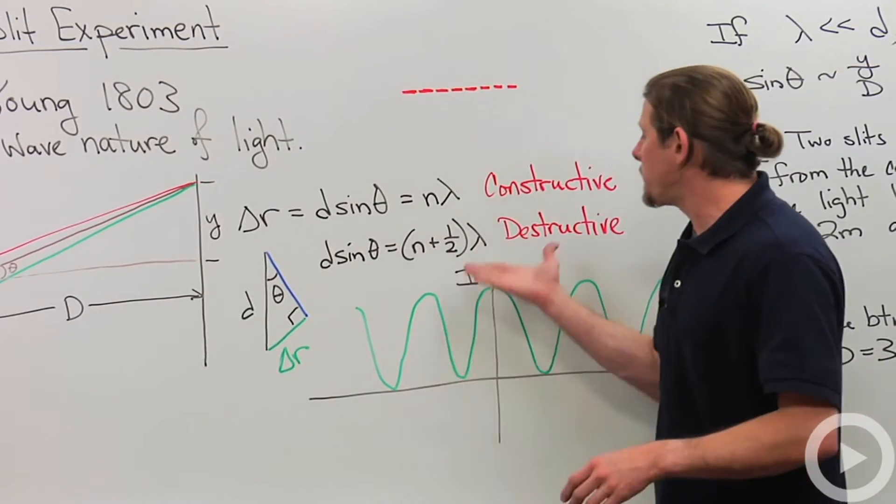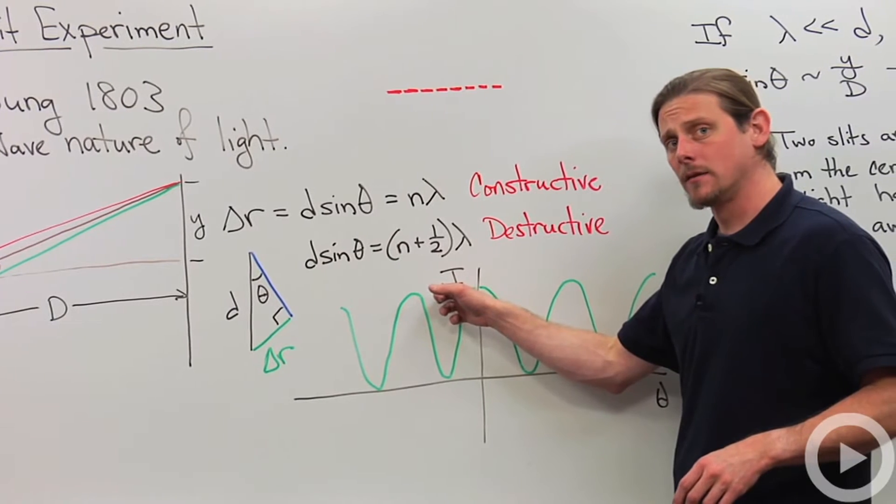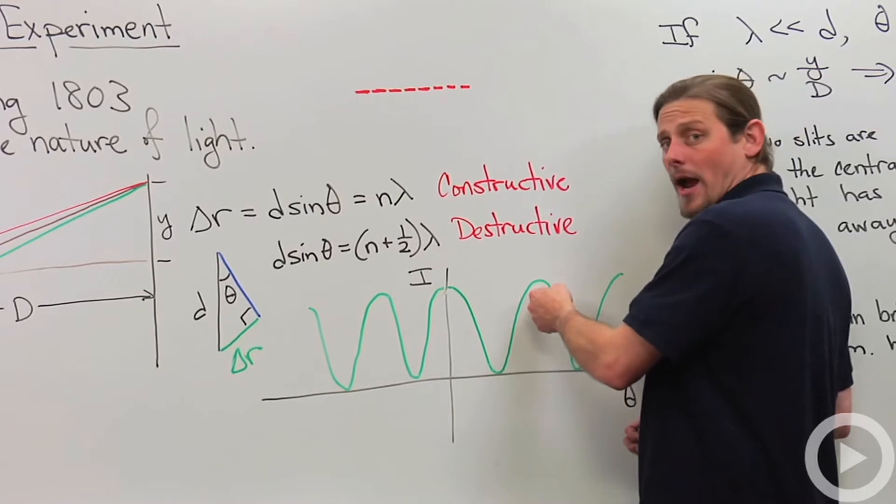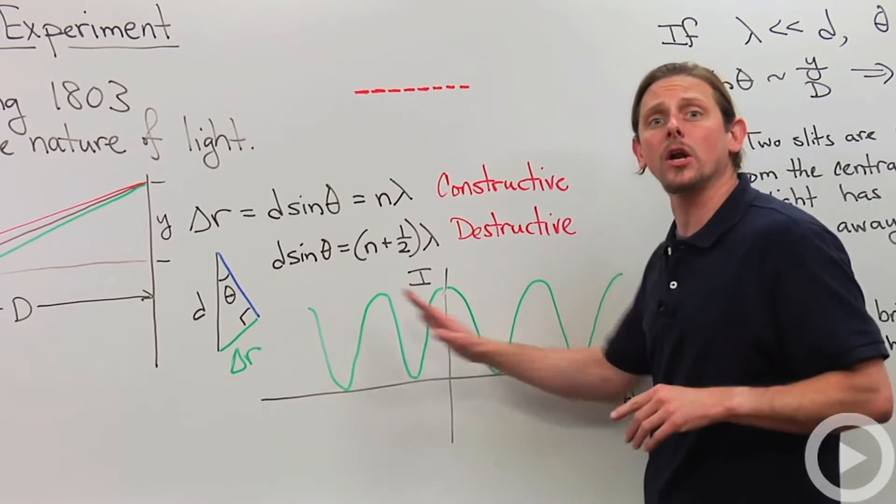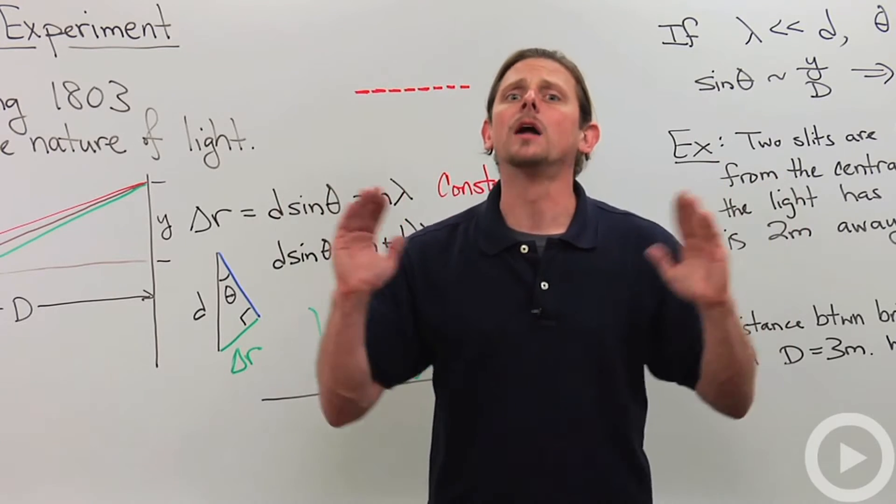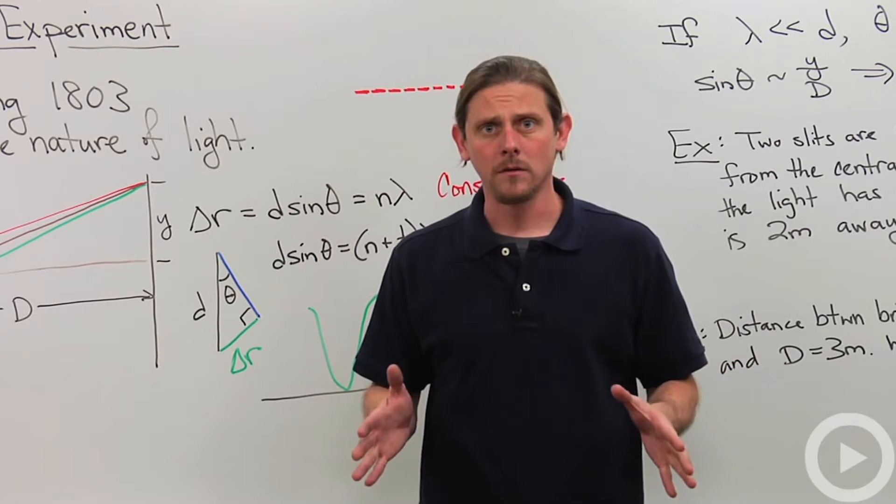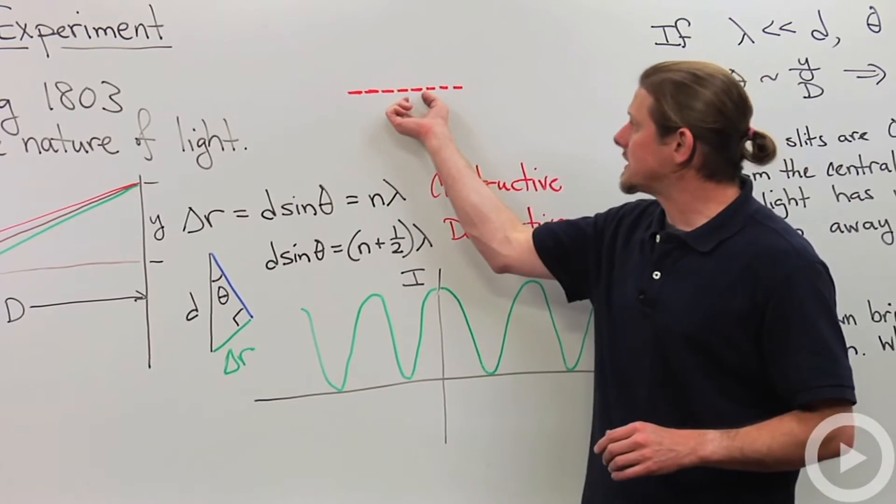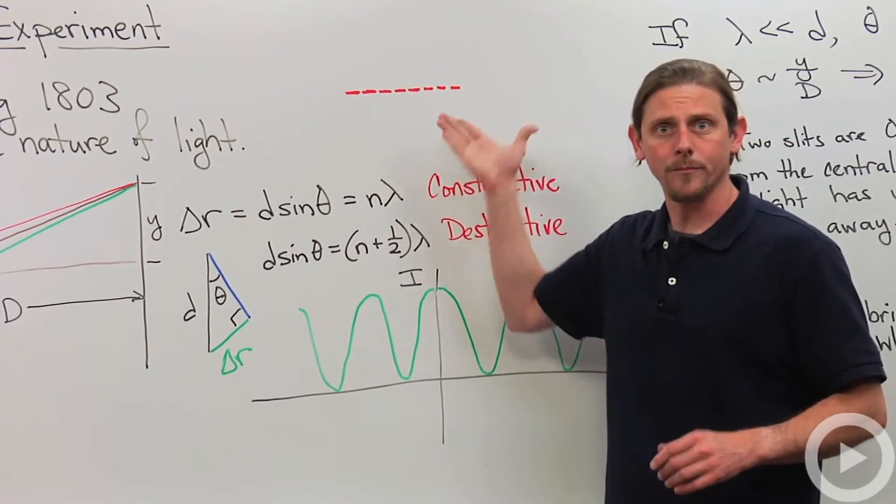So if we plot the intensity that we see as a function of angle, we'll get bright spot, dark spot, bright, dark, bright, dark, and it'll just go on like that basically uniformly until the angles get too big. When the angles are small, it really is the same size and just goes on.